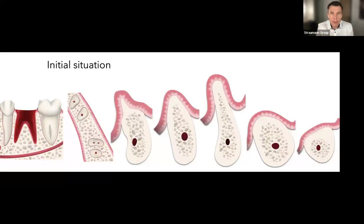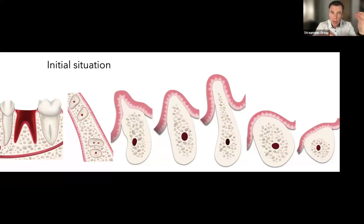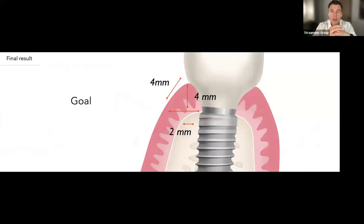I divide each case into very clear boxes: lower jaw posterior area, anterior aesthetic area, and upper jaw posterior area. We clearly understand that initial situations are absolutely different, and we need to think about techniques accordingly. Soft tissue management in the lower jaw will be completely different than in the upper jaw posterior or aesthetic area. So we divide cases like this with a very clear initial situation, to start thinking about which technique to use.